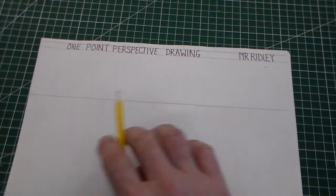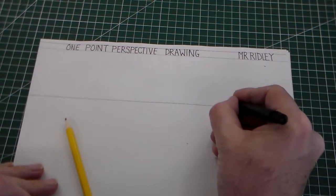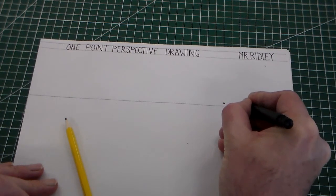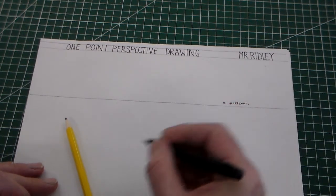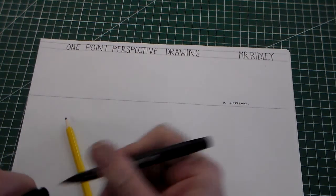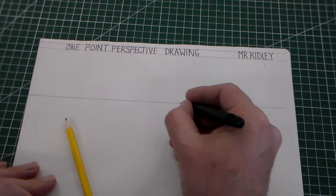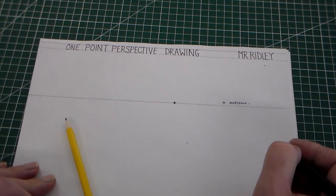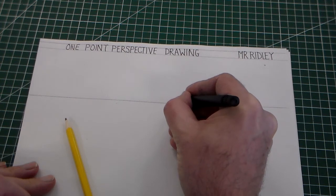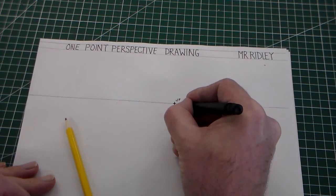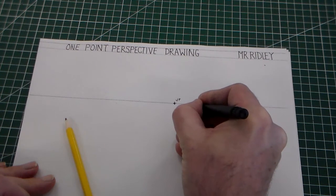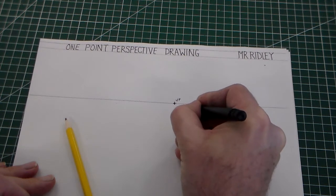So how do we do that? Well first of all we draw a horizon. Then we pick a point on the horizon and mark it with a cross or a dot. And we call this point VP. That stands for vanishing point.